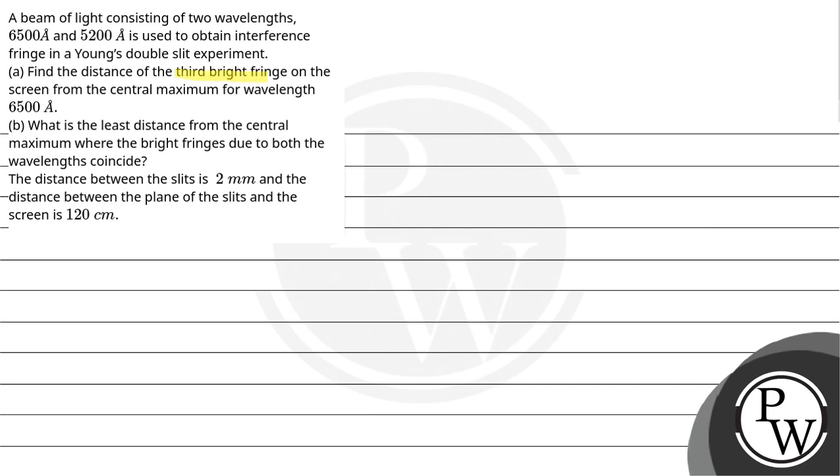Find the distance of the third bright fringe on the screen from the central maxima for wavelength 6500 angstrom. What is the least distance from the central maximum where the bright fringes due to both wavelengths coincide?